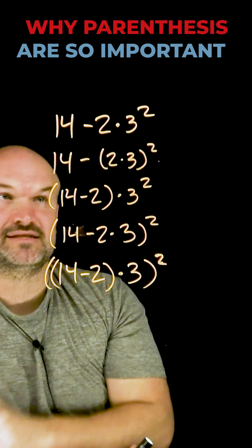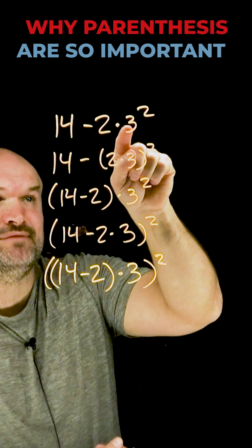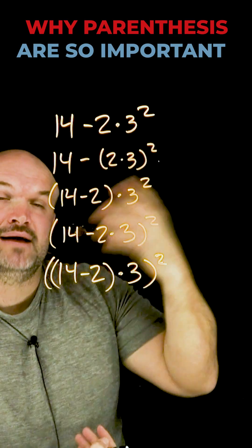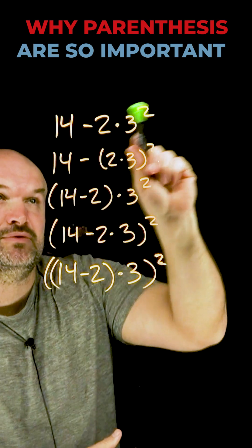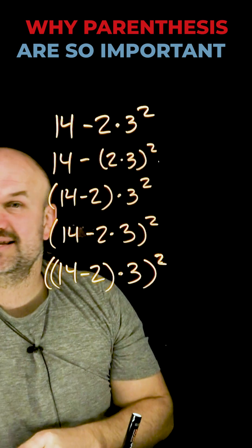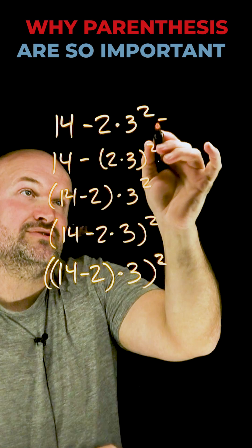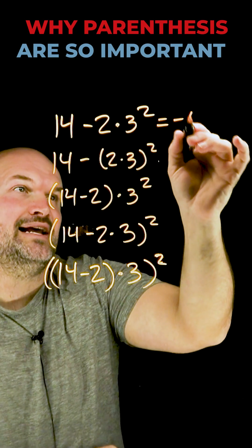So for the first one with no parentheses, just follow the order of operations. We know we have to square the three first, then I need to apply multiplication before I can apply subtraction. So three squared is nine. Two times nine is 18. 14 minus 18 equals negative four.